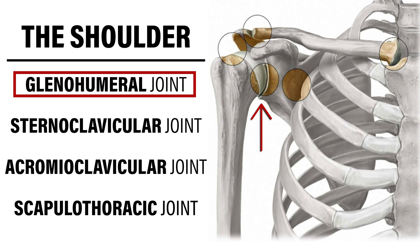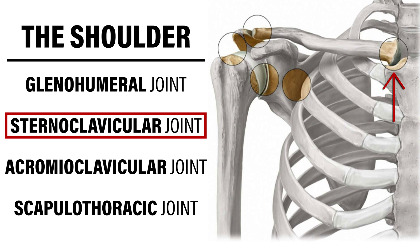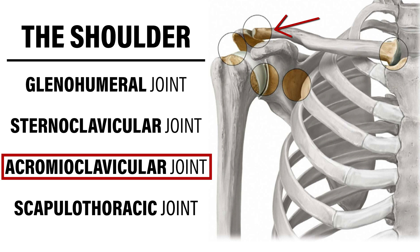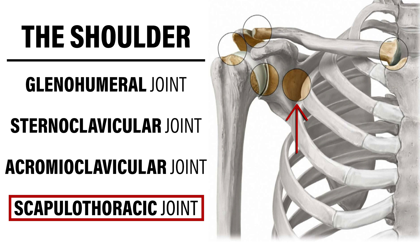Before I talk about scapular dyskinesis, I think it's important to discuss the relevant anatomy as it relates to the shoulder and how that ties into this concept known as the scapulohumeral rhythm. When most people consider the shoulder, they're thinking about this ball and socket glenohumeral joint, which is the articulation between the head of the humerus and the glenoid fossa of the scapula. However, we also have to consider the sternoclavicular joint, which is the connection between the medial aspect of the collarbone and the sternum, as well as the acromioclavicular joint, which is the lateral projection of the clavicle and the acromion of the scapula. Combined, those two joints actually help create the movement at the scapulothoracic joint, which isn't a true joint, but it's this relationship between the scapula and the thorax.